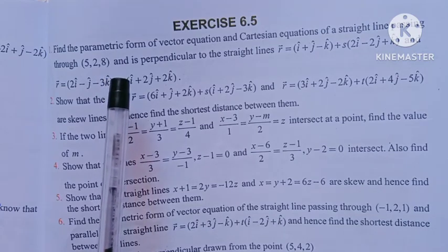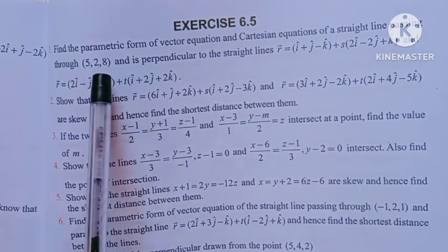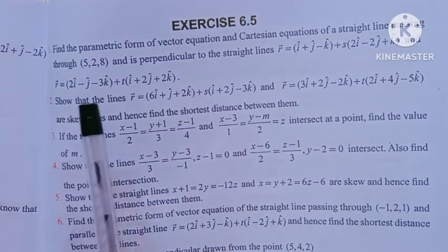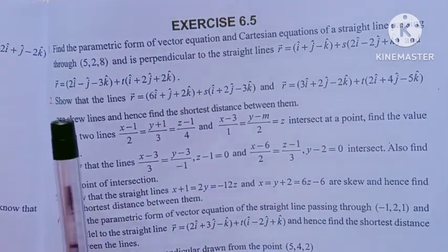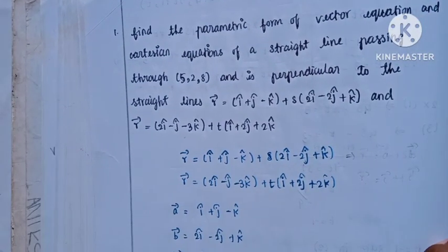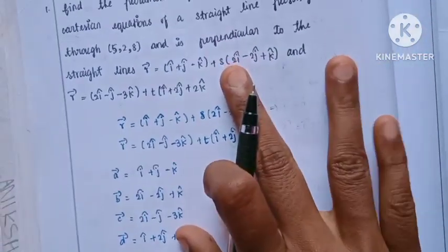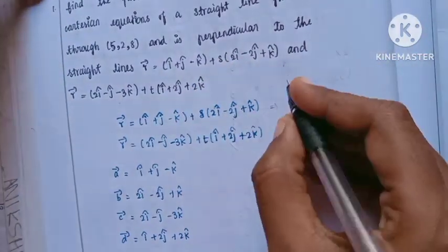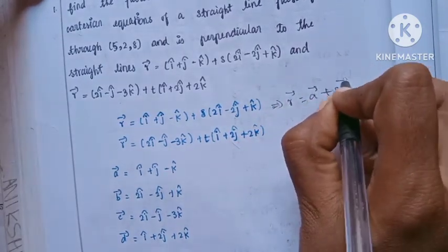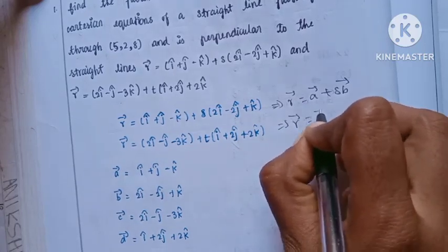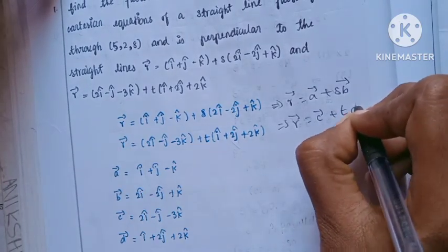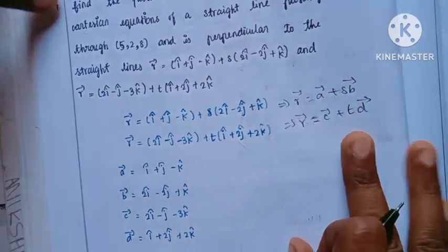We need to find the parametric form or Cartesian form. A straight line passing through the given point and perpendicular to the two straight lines. The straight line equation format is r-vector equal to a-vector plus s times b-vector, or r-vector equal to c-vector plus t times d-vector.